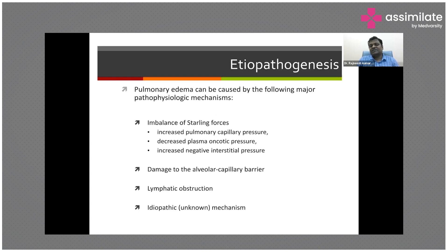There is an increase in negative alveolar pressure; when alveolar pressure becomes more negative, there is more filtration of fluid from the pulmonary vasculature to the alveoli. These three forces — pulmonary capillary pressure, plasma oncotic pressure, and interstitial pressure — are usually balanced. When an imbalance arises, there is accumulation of fluid from the pulmonary vasculature to the alveoli, causing pulmonary edema.